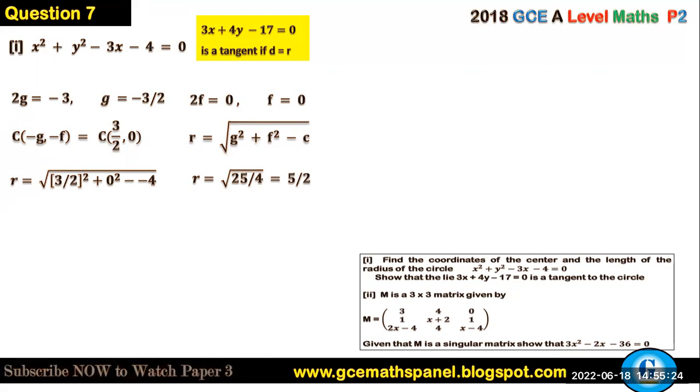For us to show that the line 3x plus 4y minus 17 is the tangent to this circle, we look for the distance from the center of the circle to this line, the perpendicular distance. If that particular distance from the center of the circle to that line is equal to the radius of the circle, then that line is a tangent to this circle.